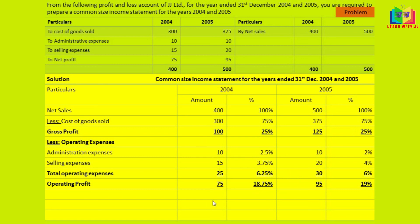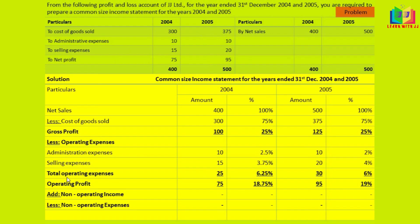Next is non-operating income and non-operating expenses. In this problem, we don't have any non-operating income or non-operating expenses. Non-operating income is added and non-operating expenses are subtracted. Since there are none here, the operating profit is our net profit.